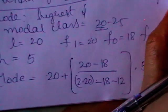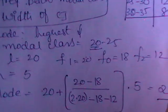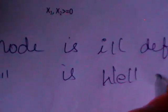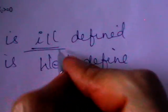Now, we have two cases called mode is ill-defined and mode is well-defined. When do you call mode ill-defined? Ill-defined means mode is not defined. When do you say mode is defined?